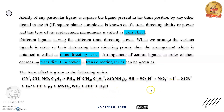इस order में अगर हम कोई दो ligands को compare करते हैं, तो जो इस series में पहले आएगा उसका trans directing ability या power ज़्यादा होगी as compared to the later one. For example, chloride और ammonia के case में, जहाँ पे chloride ligand लगा है उसकी trans directing effect ज़्यादा strong होगी as compared to ammonia.